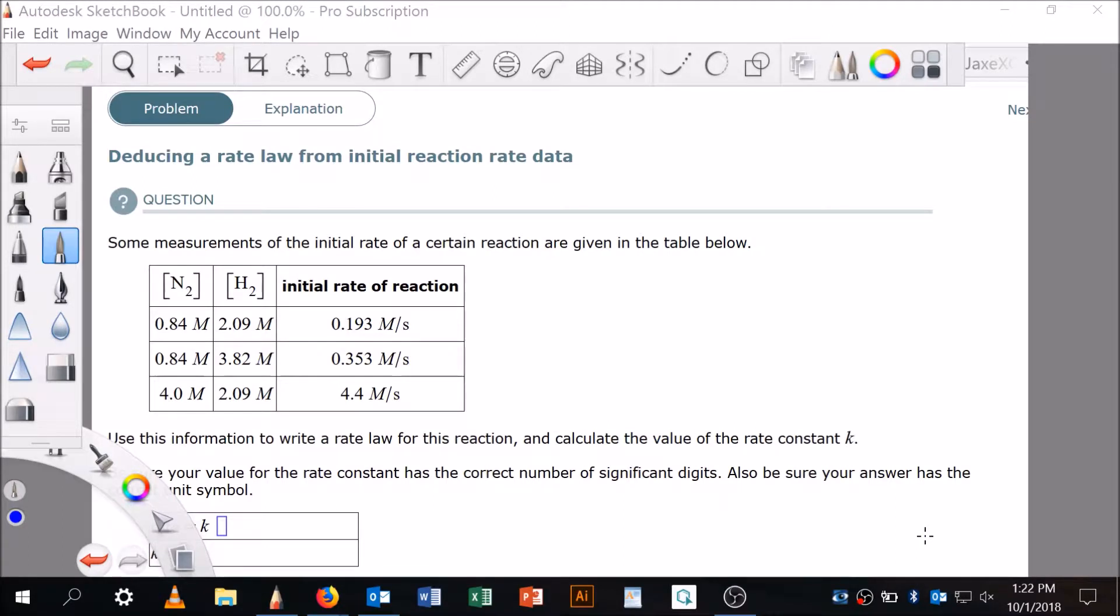This is a common problem: deducing a rate law from initial reaction rate data. The format is always the same when you have a problem like this. You're given some concentration of reactant A, some reactant B, and then rate in trial 1, 2, 3, and 4. Sometimes the rate will be in a different column, but it's always the same.